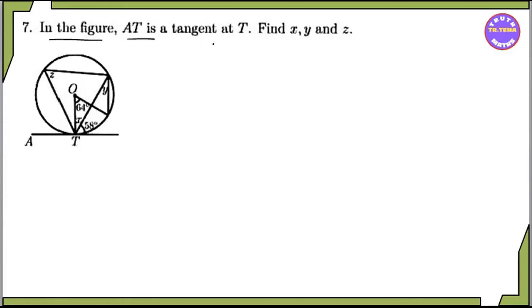Now for the next problem, we have angles X, Y, Z to find. We are given 58 degrees and 64 degrees as known angle values in the figure.